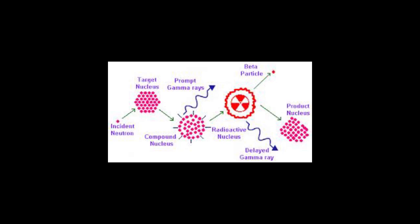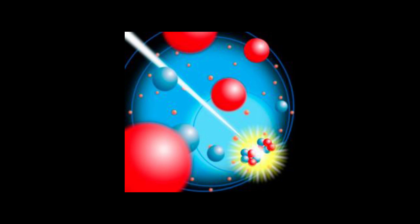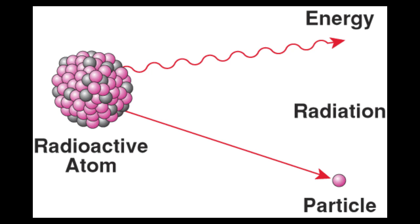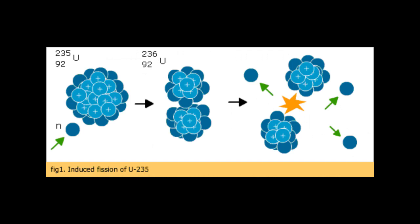Gamma radiation is the product of radioactive atoms. Depending upon the ratio of neutrons to protons within its nucleus, an isotope of a particular element may be stable or unstable. When the binding energy is not strong enough to hold the nucleus of an atom together, the atom is said to be unstable. Atoms with unstable nuclei are constantly changing, and over time their nuclei spontaneously disintegrate in a process known as radioactive decay.